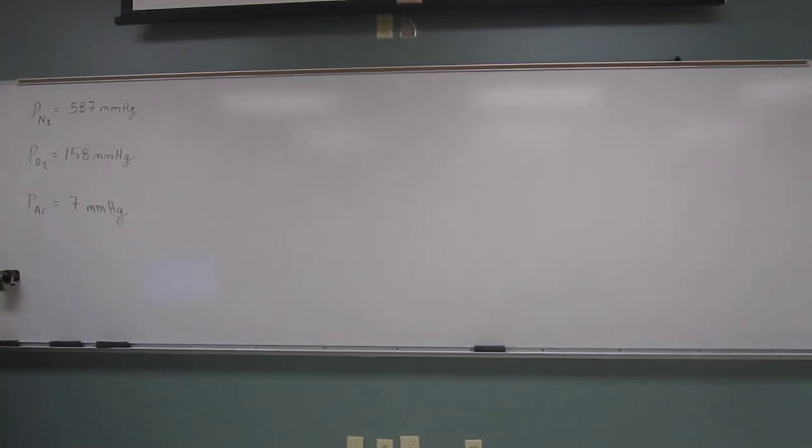The problem says: an atmospheric sample contains nitrogen, oxygen, and argon. If the partial pressure of nitrogen is 587 millimeters of mercury, oxygen is 158 millimeters of mercury, and argon is 7 millimeters of mercury, what is the total pressure of this atmospheric sample?